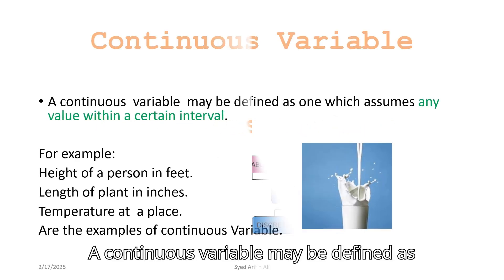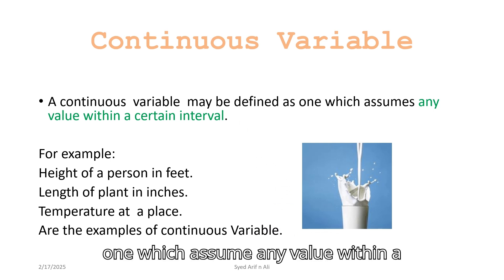A continuous variable may be defined as one which assumes any value within a certain interval. For example, height of a person in feet, length of a plant in inches, or temperature at a place are examples of continuous variables.